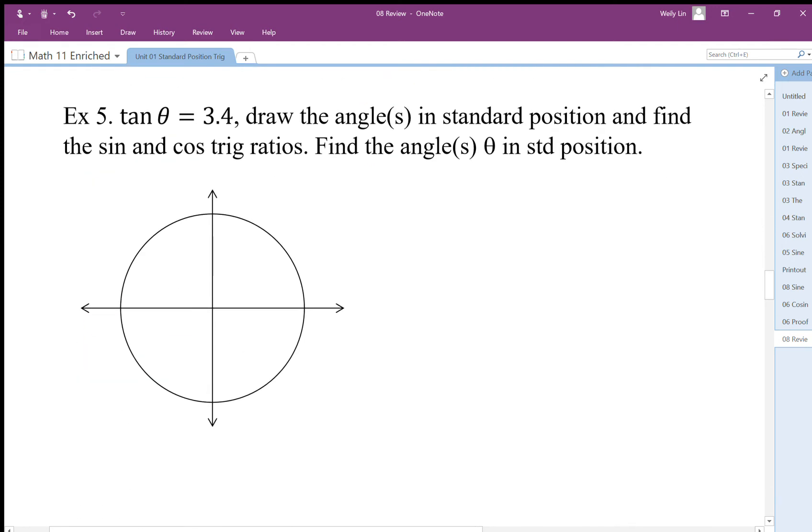This is not an exact value problem because we're now given a ratio, a decimal ratio in fact. So it implies that we don't have to use exact values. We're going to first draw this in. We're given tan, the slope is 3.4.